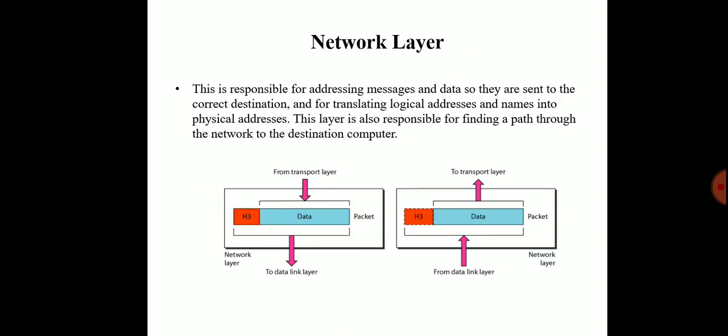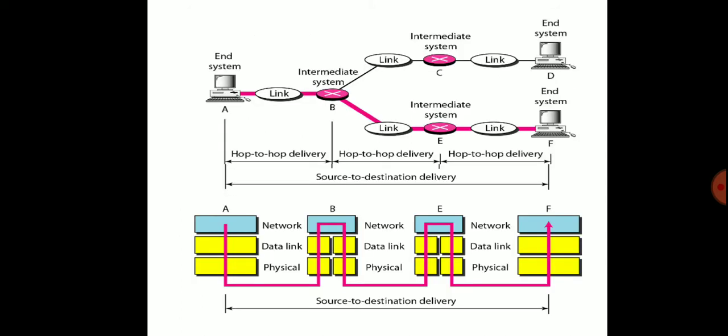Now the next topic is the network layer. The network layer is responsible for addressing messages and data so they are sent to the correct destination, and for translating local addresses and names into physical addresses. This layer is also responsible for finding a path through the network to the destination computer. The network layer is responsible for source-to-destination delivery possible across multiple networks, whereas the data link layer oversees the delivery of the packet between two systems on the same network.